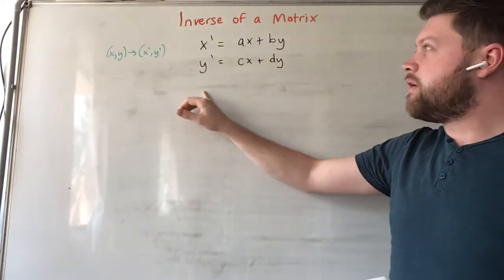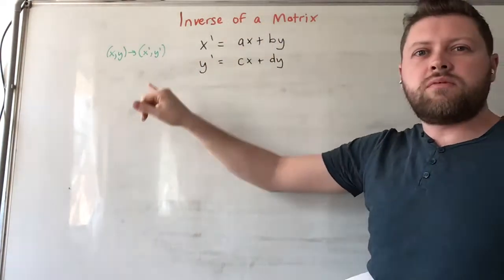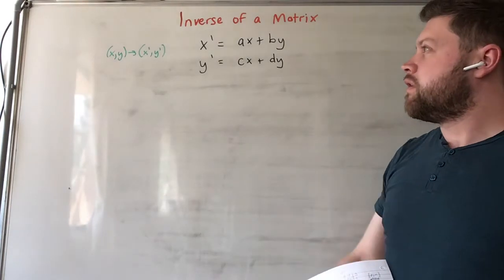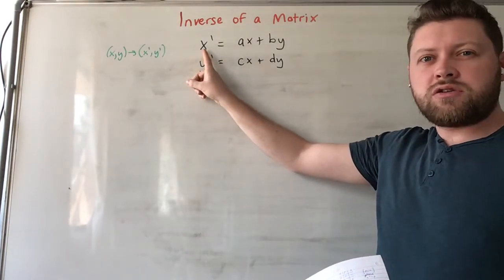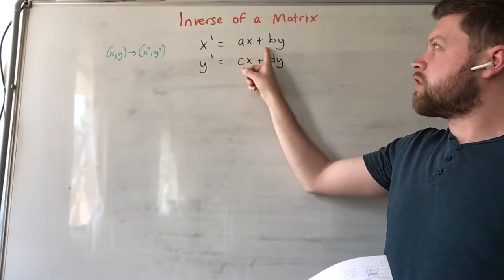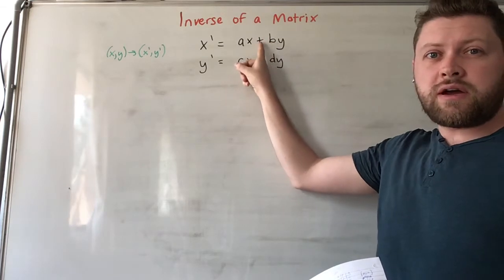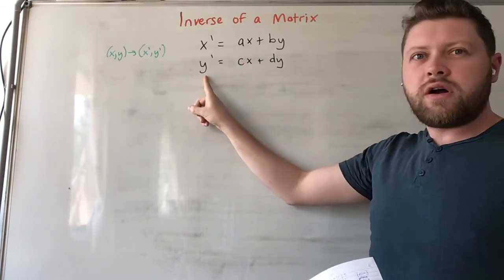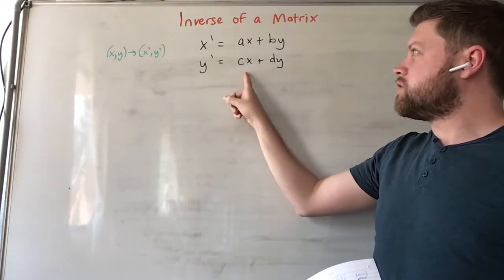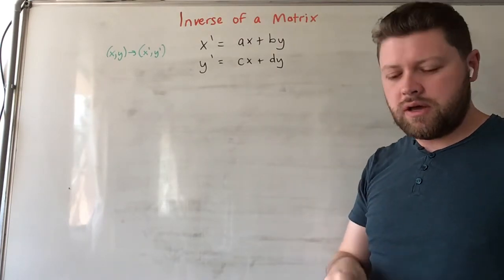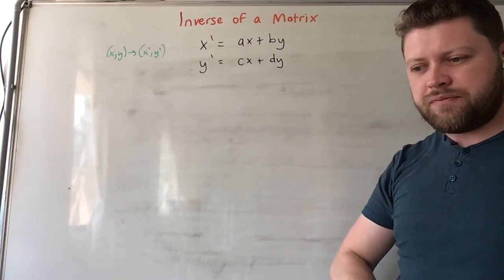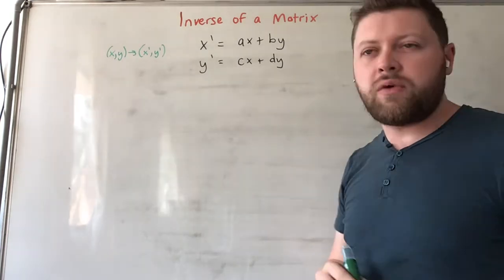We were able to show that linear transformations of this form can be generalized in terms of equations like this. The new x' coordinate is some linear combination of the original x and y, and the new y' coordinate is some linear combination of those same original x and y.